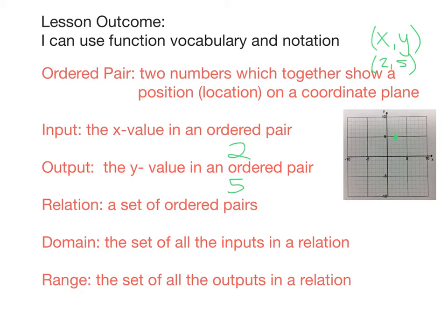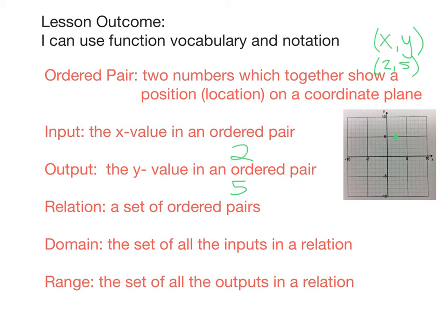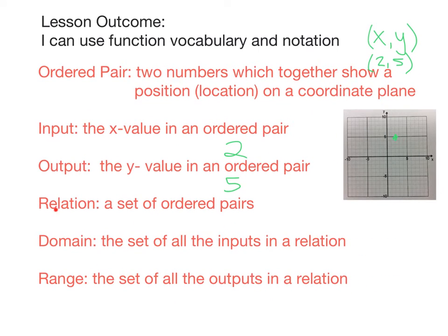A relation is a set of ordered pairs. Typically, a relation is written in this way here. We use these brackets, like so. And then we have a bunch of ordered pairs. Typically, they have a comma in between them. They don't have to, but typically they will.